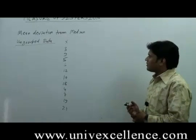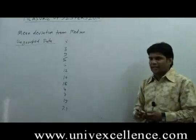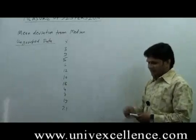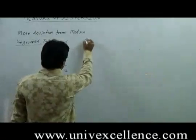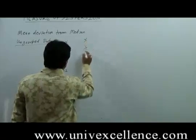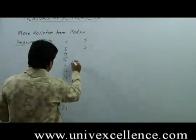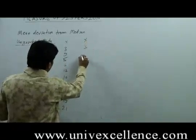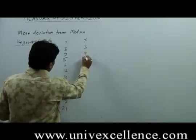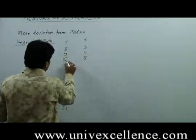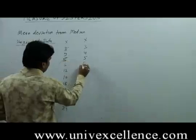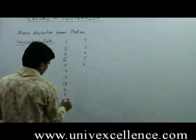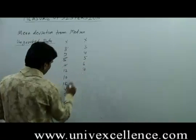For finding out the median, first we need to arrange the data in ascending order. In arranged form: 3, 4, 5, 6, 7...